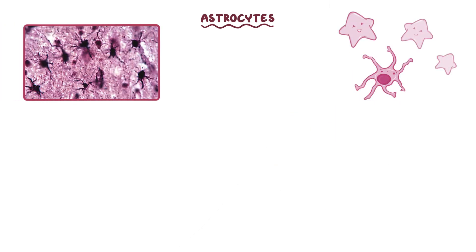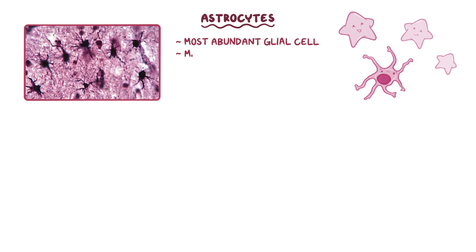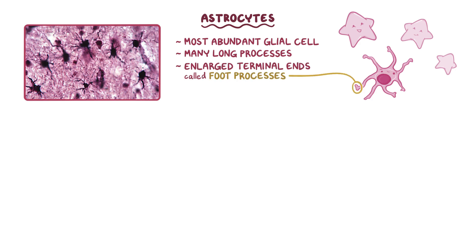In the CNS, the star-shaped astrocytes are the most abundant type of glial cell. They have many long processes that extend in all directions from their cell body. Many of the processes have enlarged terminal ends called foot processes, which surround capillaries as part of the blood-brain barrier.